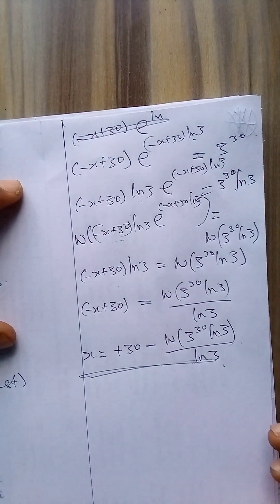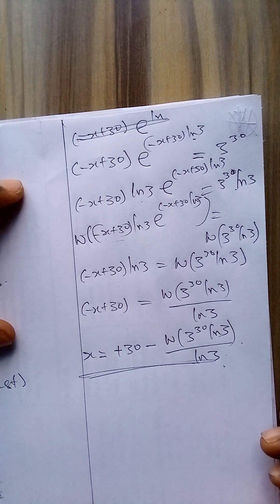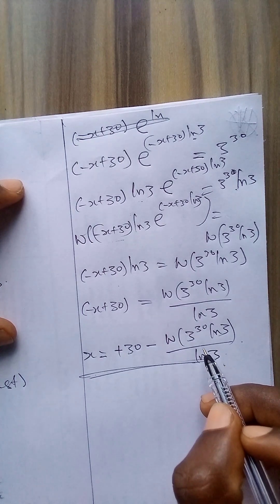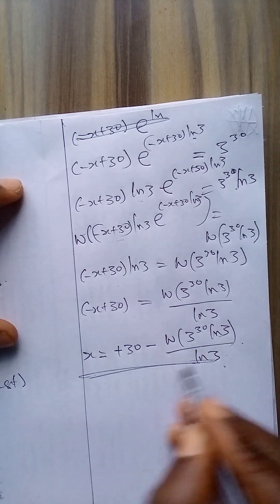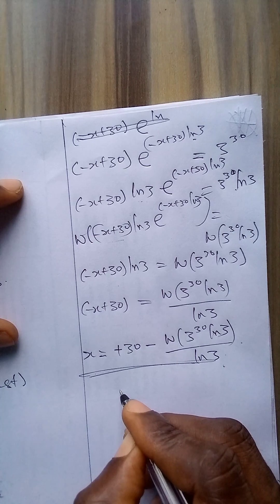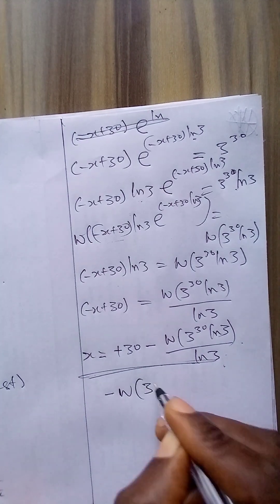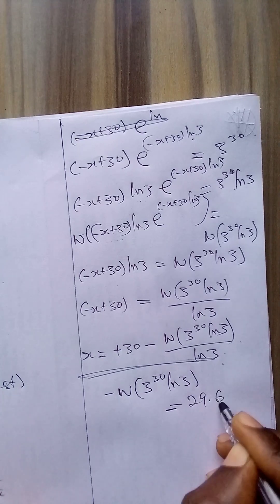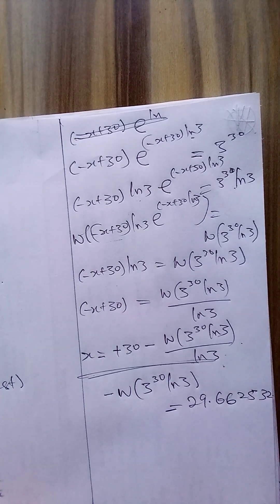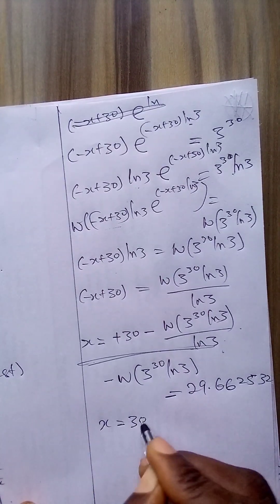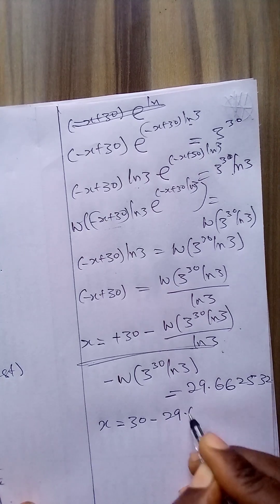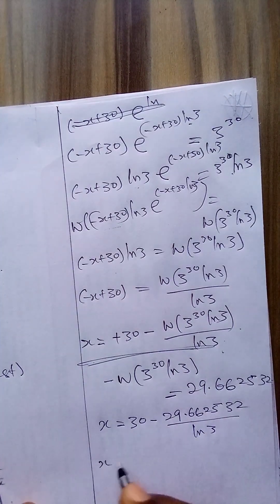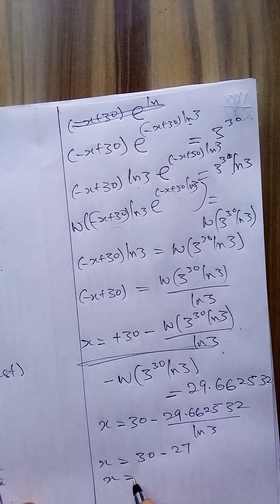This is the solution to the equation. To find the exact numerical value, we consult Wolfram Alpha. The constant W of 3 to the power 30 times ln 3 gives 29.662532. So x equals 30 minus 27 divided by ln 3, which equals 3. This confirms our earlier guess-and-check result that x equals 3.